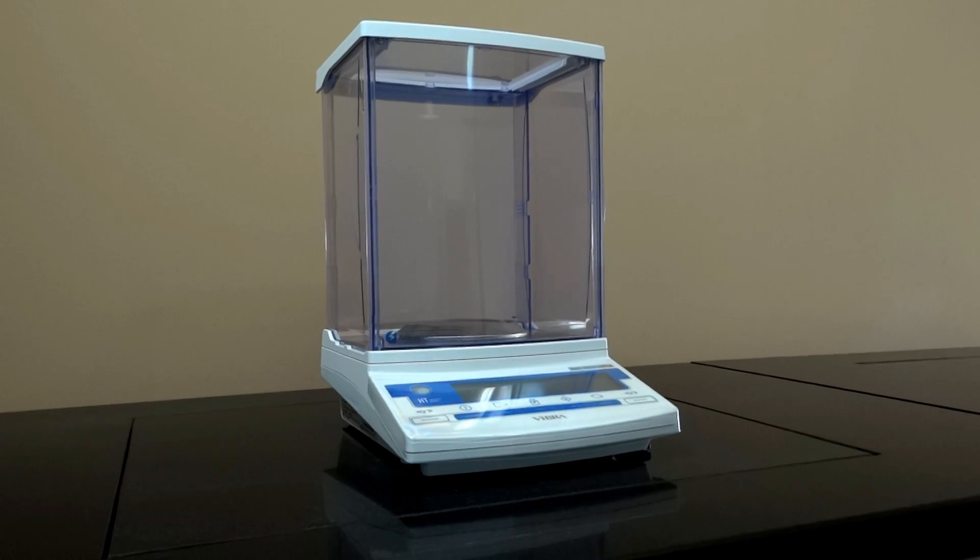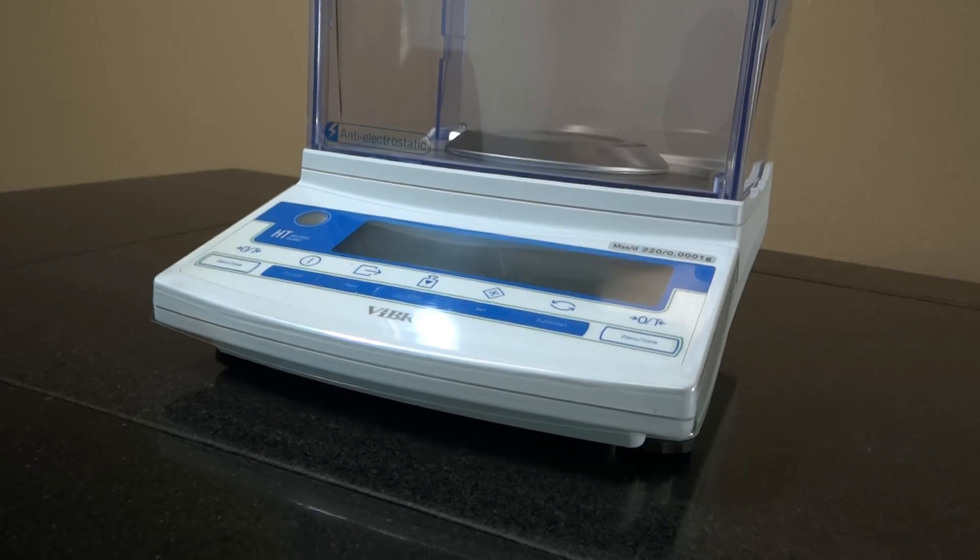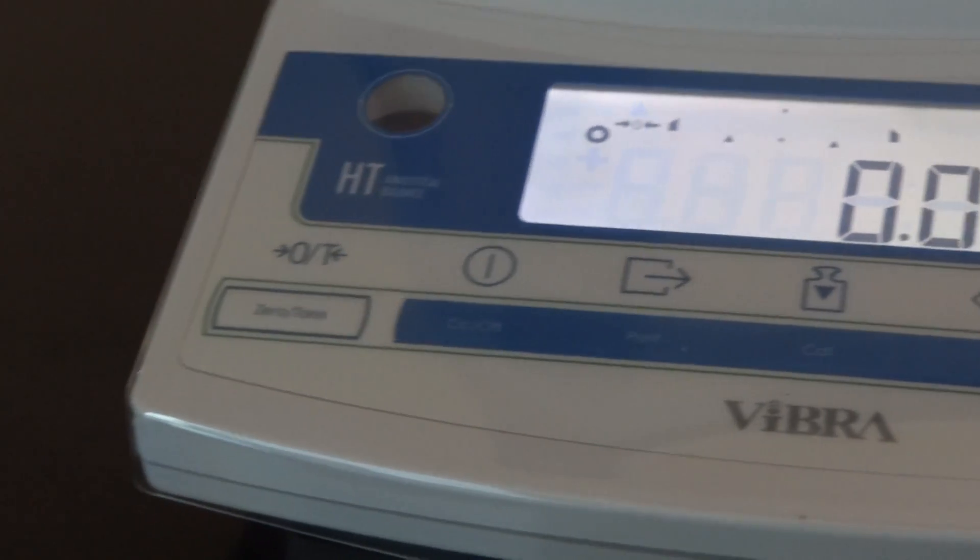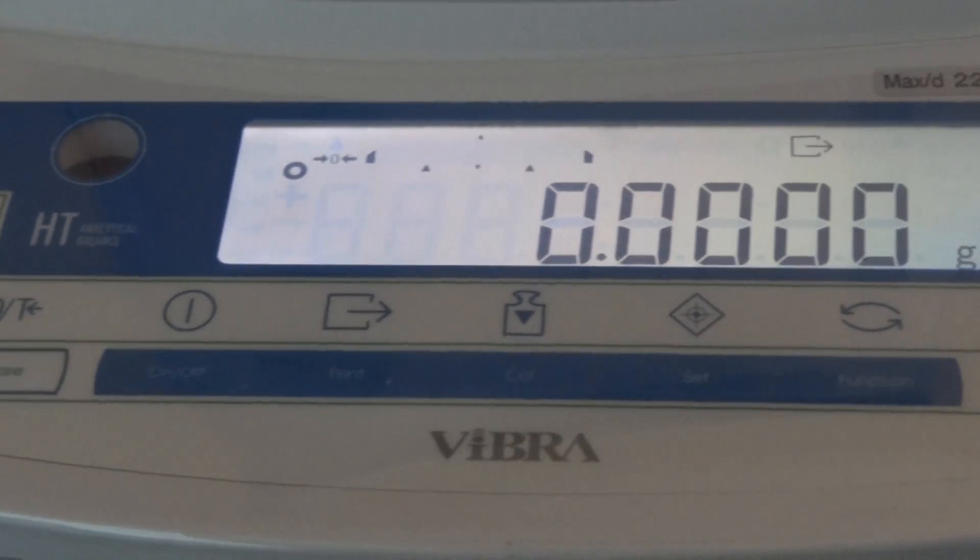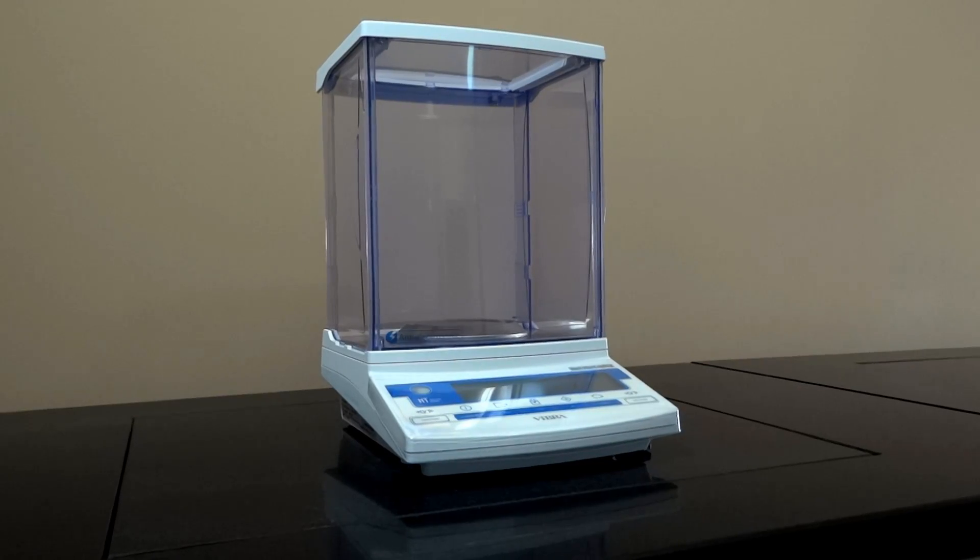The HT224 and the HT224R are analytical balances equipped with the high-performing tuning fork sensor. The HT is designed and manufactured in Japan to provide the sophisticated lab user many advantages and flexibility.